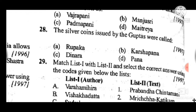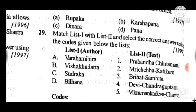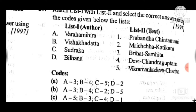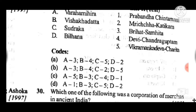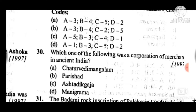Question 29 is a match-list question. The answer is option B: A relates to 3, B relates to 4, C relates to 2, and D relates to 5.